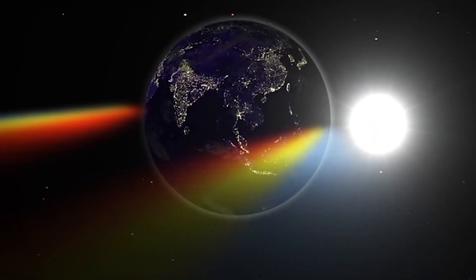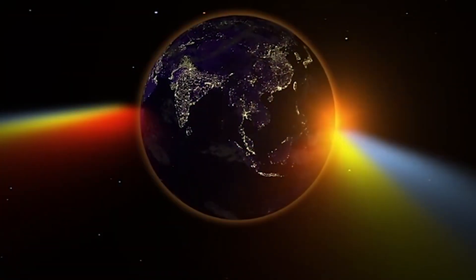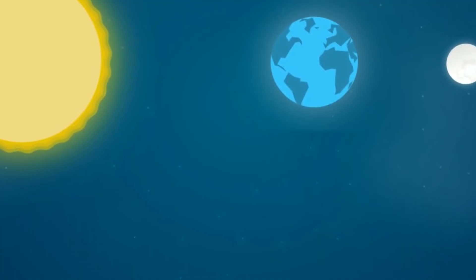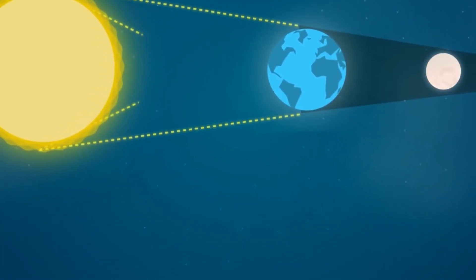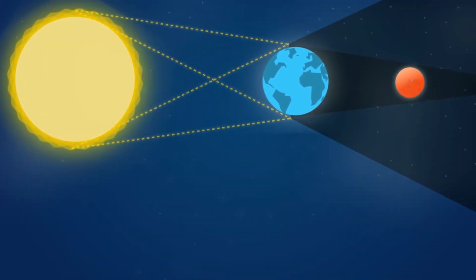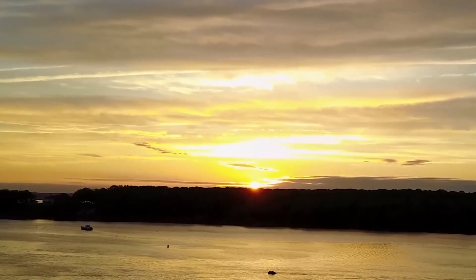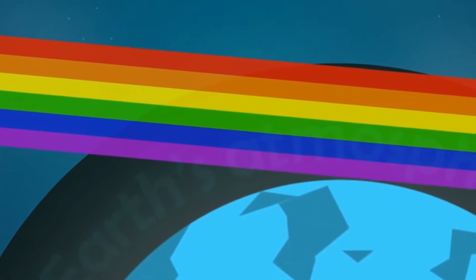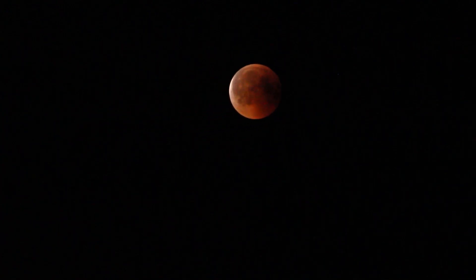The atmosphere filters and refracts the sunlight, leaving only the red part of the spectrum behind. It's the same effect that provides us with sunsets. If there were no atmosphere on Earth, the Moon would go completely dark during a lunar eclipse.